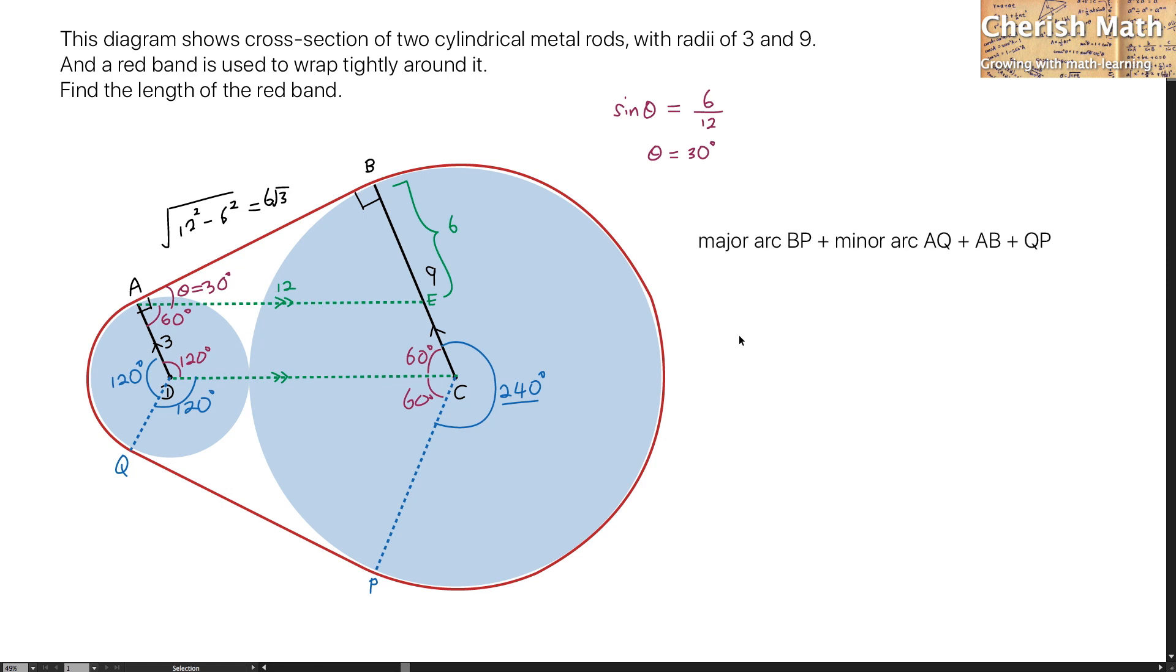Up to this point, I have all the relevant information to solve the problem. And by using the major arc of BP plus the minor arc of AQ plus the length of AB plus the length of QP, that is going to form the entire length of the red band that we are looking for.